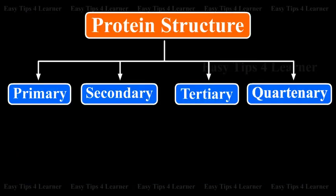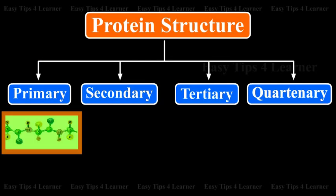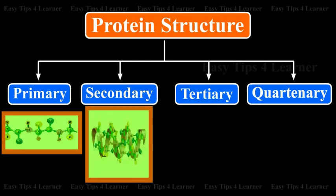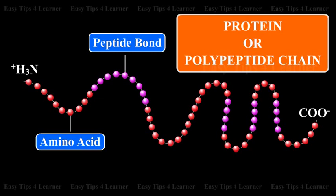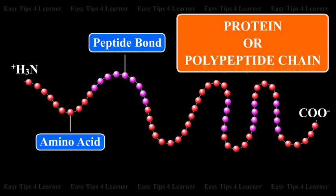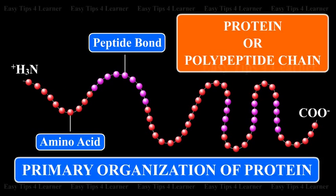The protein structure is divided into primary, secondary, tertiary, and quaternary levels. A protein or polypeptide chain is formed of several amino acids linked with each other by peptide bonds. This linear arrangement is termed the primary organization of a protein.